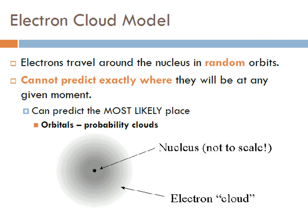There are still discoveries being made about atomic structure, but this is the model we currently use — the electronic cloud model. In this model, electrons travel around the nucleus in random orbits and we cannot predict exactly where they will be at any given moment, but we can predict the most likely place. We call these orbitals or probability clouds — a dense positive nucleus in the center surrounded by orbitals where the electrons live. Take a minute and draw this picture and label it in your timeline.